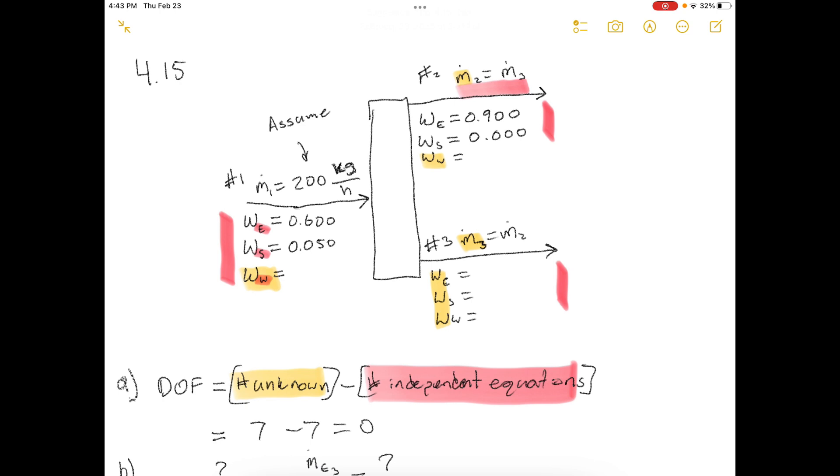Alright, so today we're working out of Elementary Principles of Chemical Processes 3rd Edition, and I had a request to do problem number 4.15 from the next chapter. So I'll go ahead and work through this problem and give you my take on it.